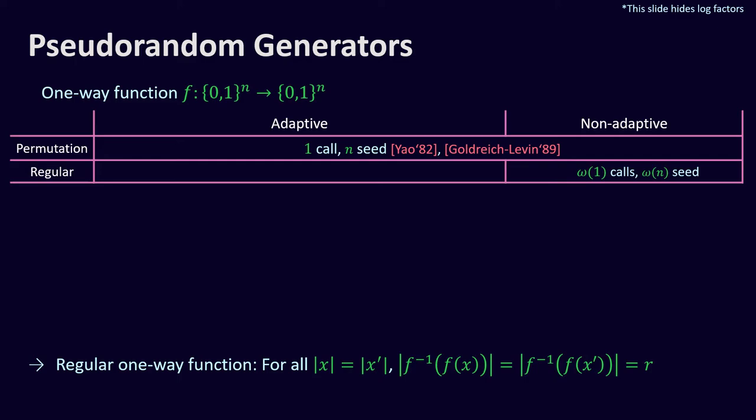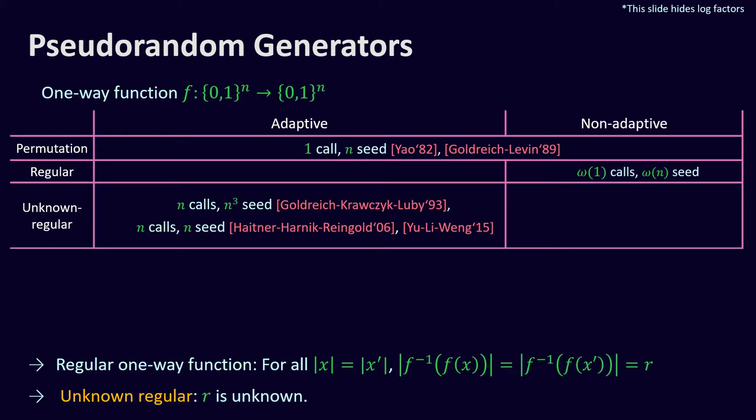However, in order to implement this construction we need to know the regularity parameter R, the number of preimages every image has. If we do not know this regularity parameter, we say the function is unknown regular, and in this case the best construction we have uses a linear number of adaptive calls to the one-way function and linear seed length. This is due to work of Haitner, Reingold, and Rothblum, which uses a method called randomized iterate introduced by Goldreich, Krawczyk, and Luby.